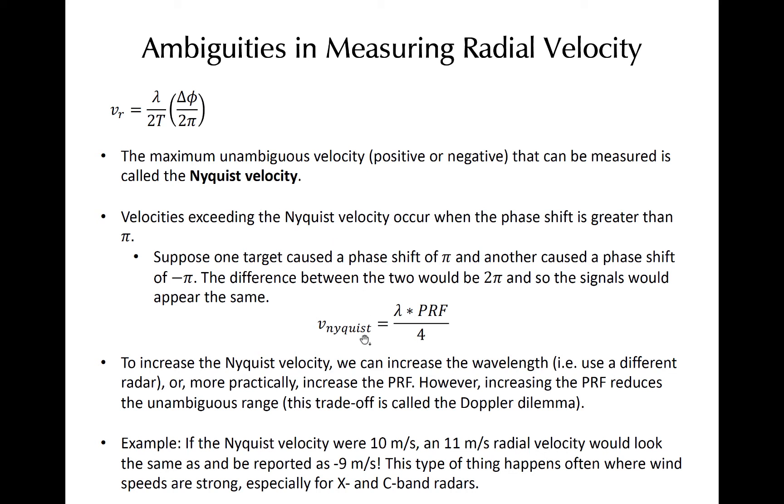The Nyquist velocity, shown here, is a function of the PRF used by the radar. So as we increase the frequency of pulse transmission, or decrease the pulse period, the maximum resolvable velocity increases.